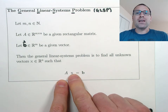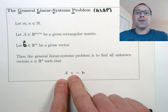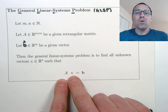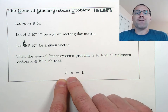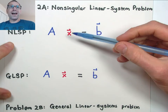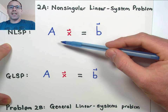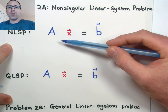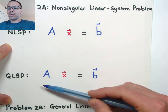Notice that this problem statement looks very similar to the non-singular linear system, so much so that it's really important that we discuss the similarities and differences between those two problems. We have both the non-singular linear systems problem that we studied in lessons 12, 13, 14, and 15, and we also have the general linear systems problem.